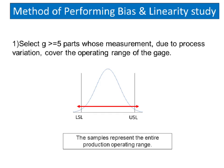Method of performing bias and linearity study. Step 1: Select G greater than or equals 5 parts whose measurement, due to process variation, cover the operating range of the gauge. The availability of samples over the entire operating range is very important for proper analysis.